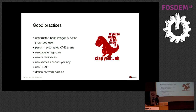A couple of good practices: always use trusted base images and define a non-root user — that is not the case for more than 80% of the images you find on Docker Hub, so don't pull random images from there. Always perform automated CVE scans. Use private registries if you can. Always use namespaces and service accounts, and obviously RBAC, which is nowadays pretty much the default. Use network policies, which is typically an admin task.